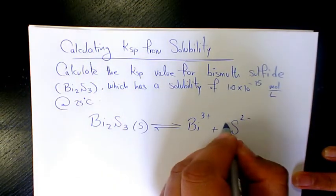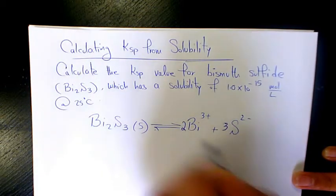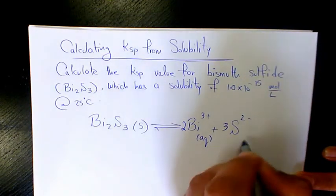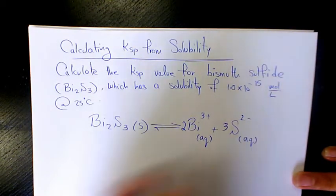When you balance it, it's going to be two of this guy and three of this, and they are obviously in aqueous solution.